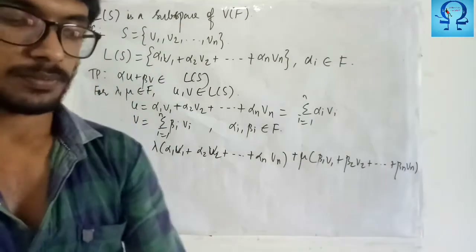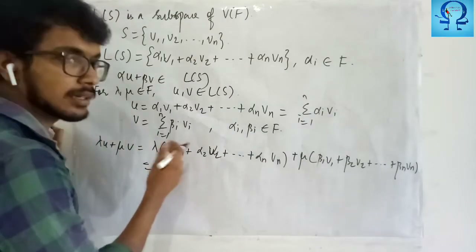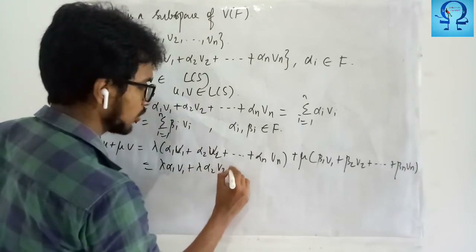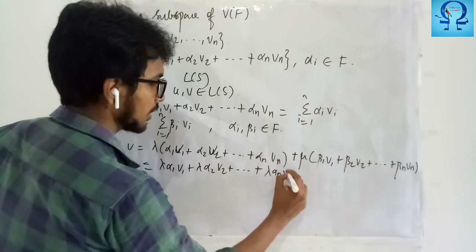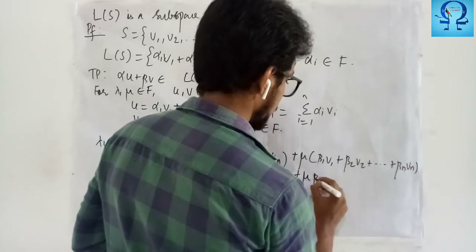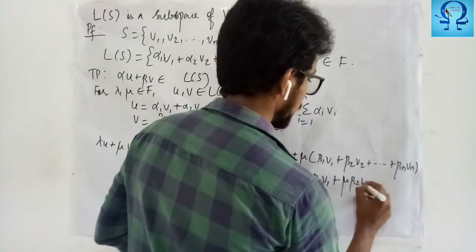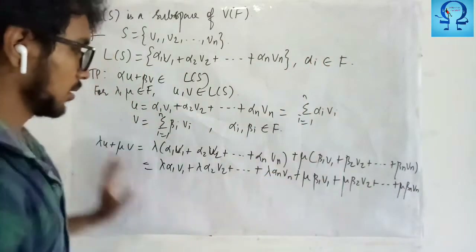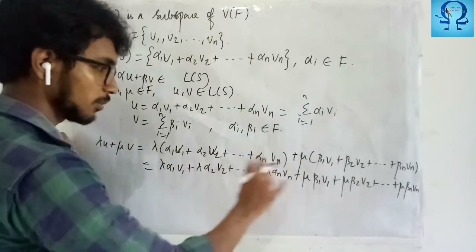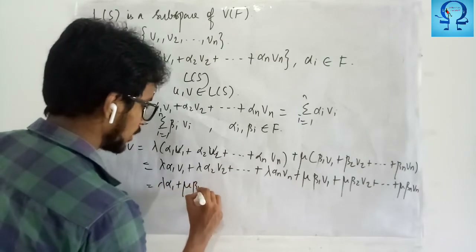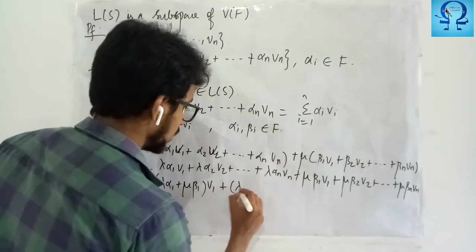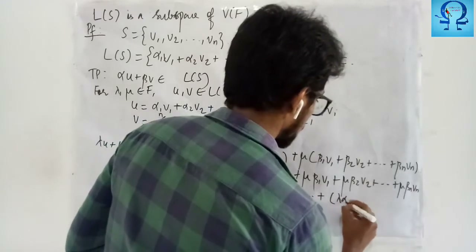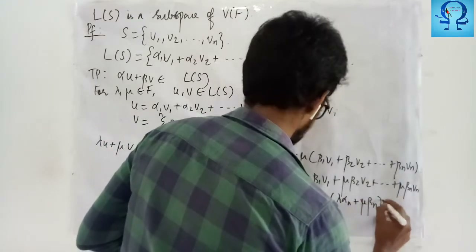Since scalar multiplication distributes, we get lambda·alpha_1·v1 plus lambda·alpha_2·v2 plus ... plus lambda·alpha_n·vn, plus mu·beta_1·v1 plus mu·beta_2·v2 plus ... plus mu·beta_n·vn. Using distributivity, we can collect terms: (lambda·alpha_1 plus mu·beta_1)·v1 plus (lambda·alpha_2 plus mu·beta_2)·v2 plus ... plus (lambda·alpha_n plus mu·beta_n)·vn.